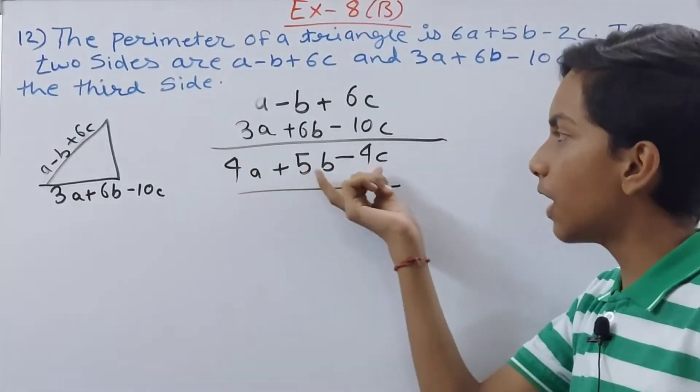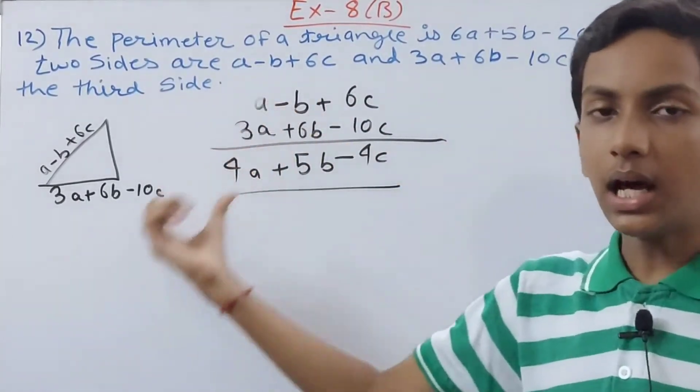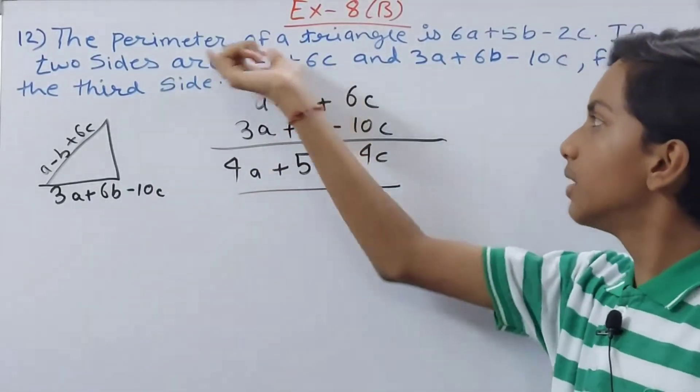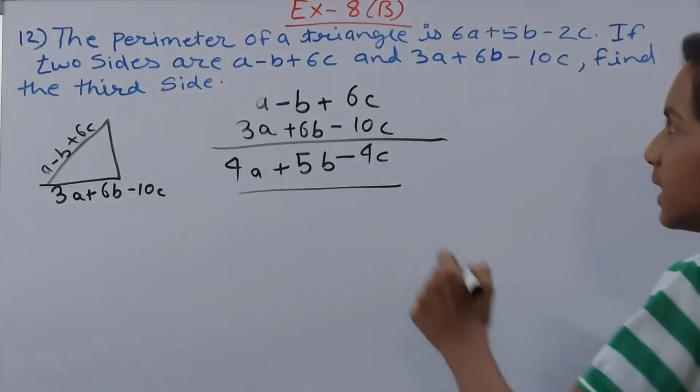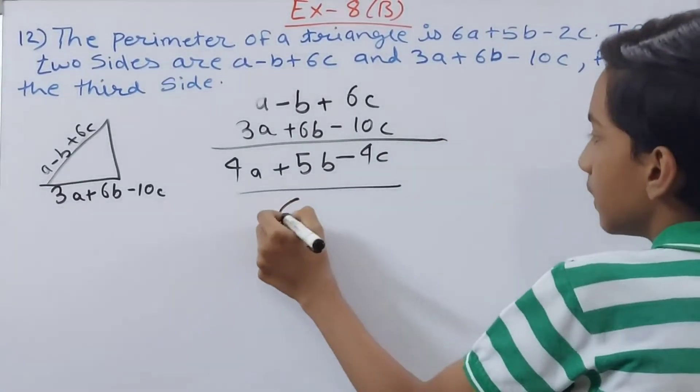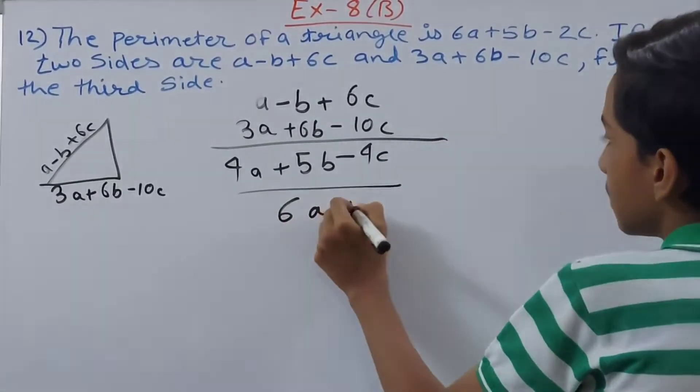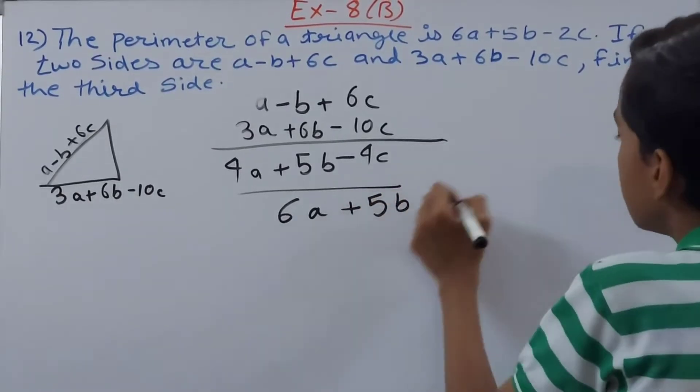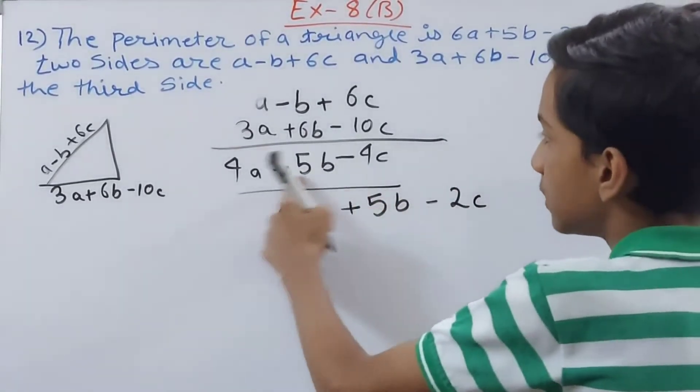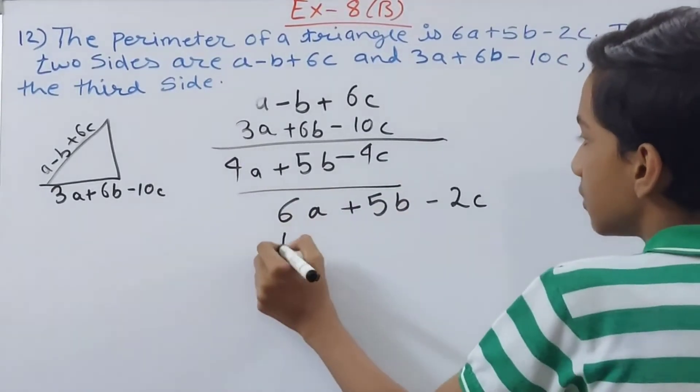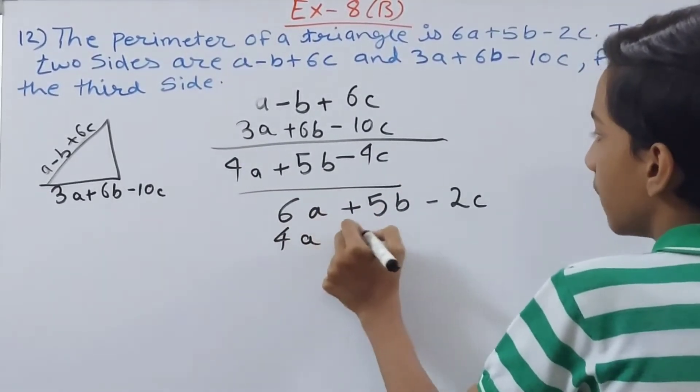Now this we will subtract from the perimeter of our triangle. So the perimeter of our triangle is 6a + 5b - 2c. And now the sum of the two sides will be written here: 4a + 5b - 4c.